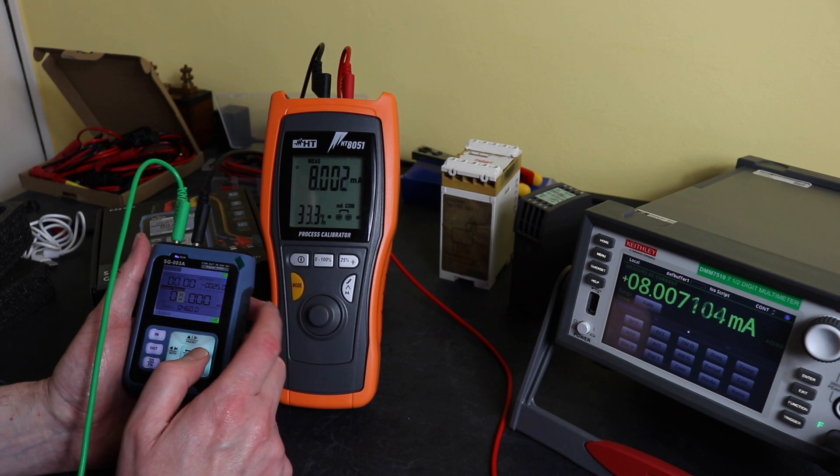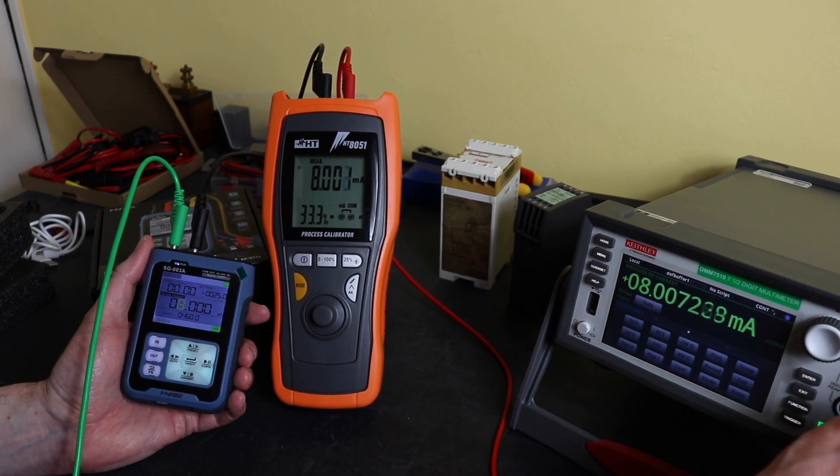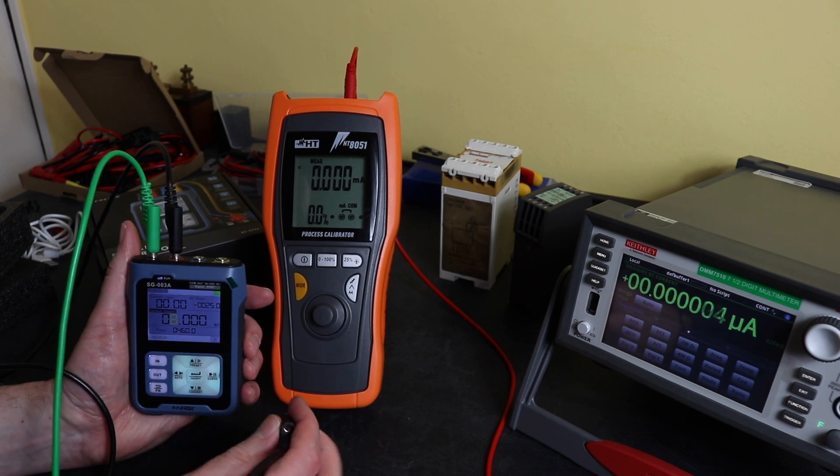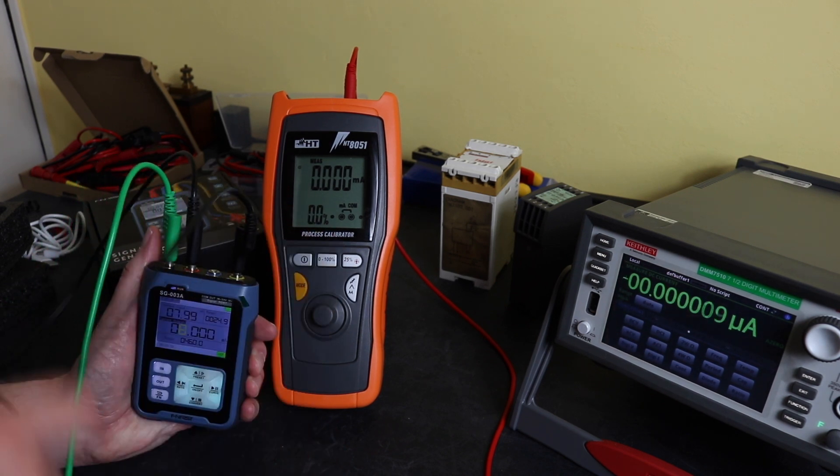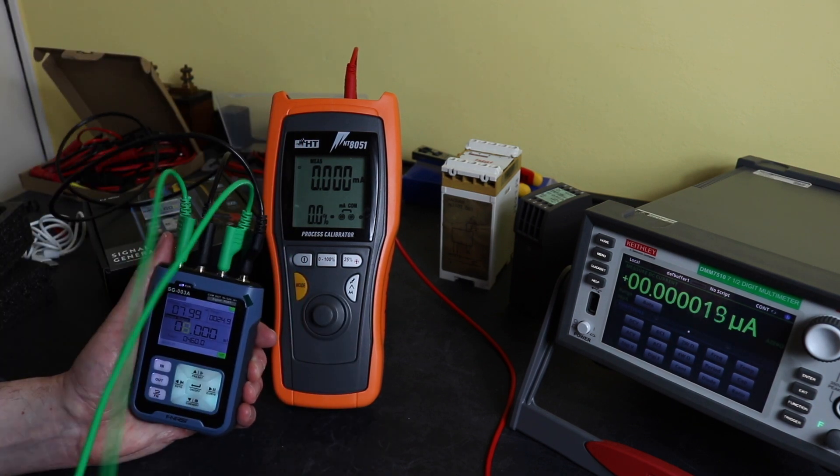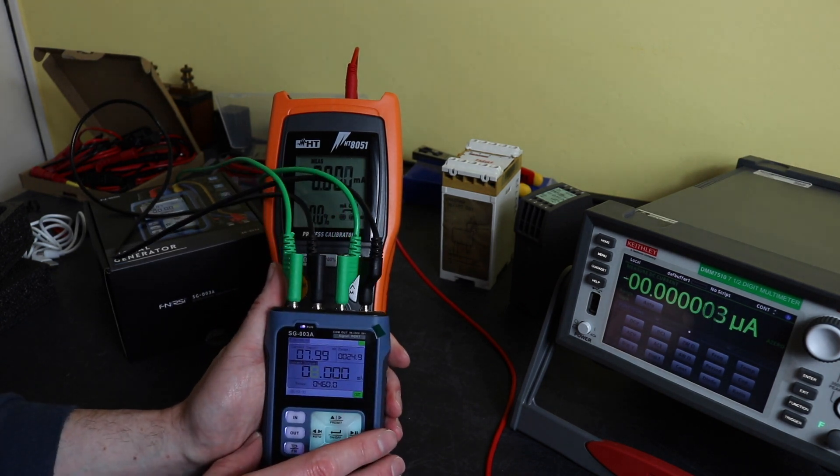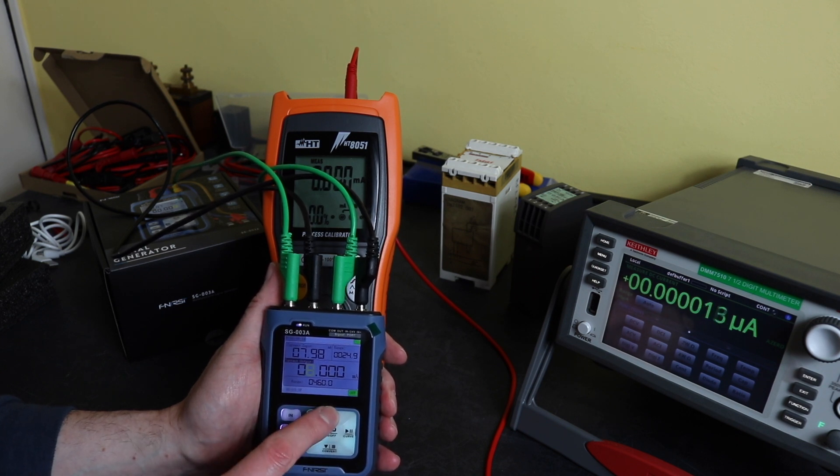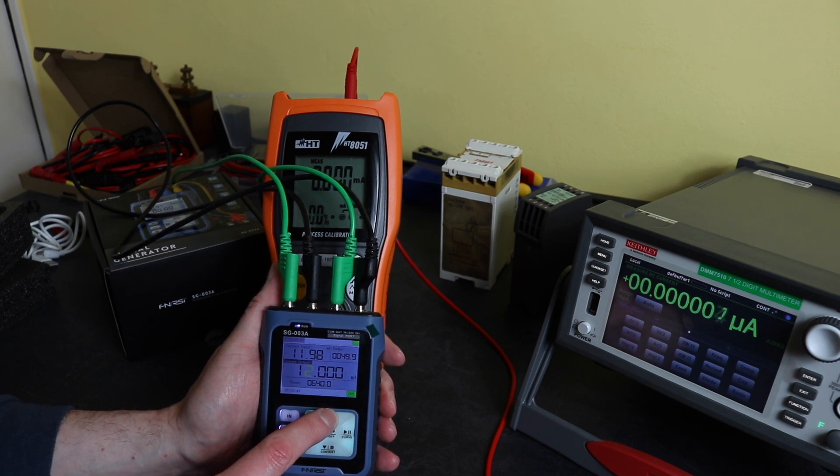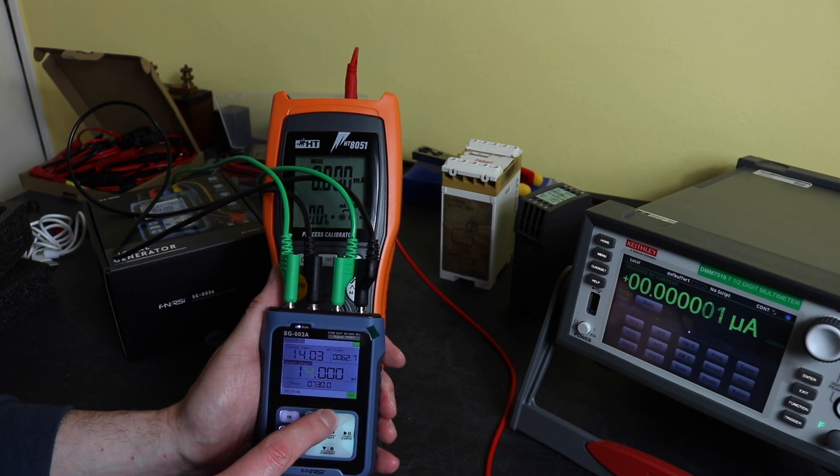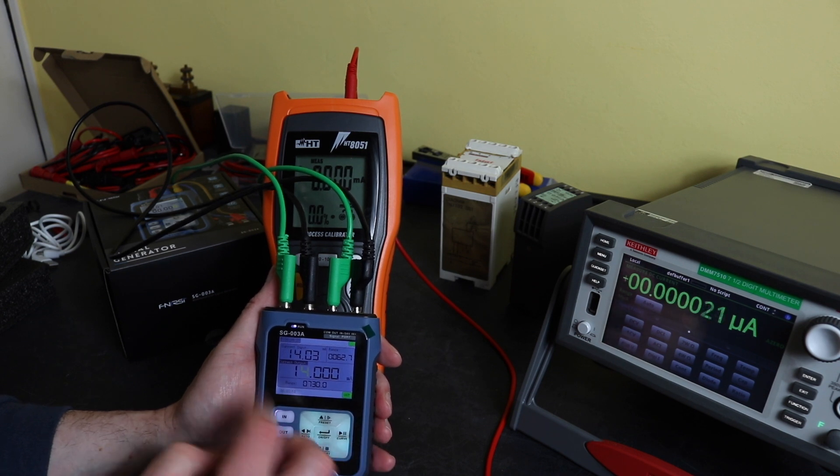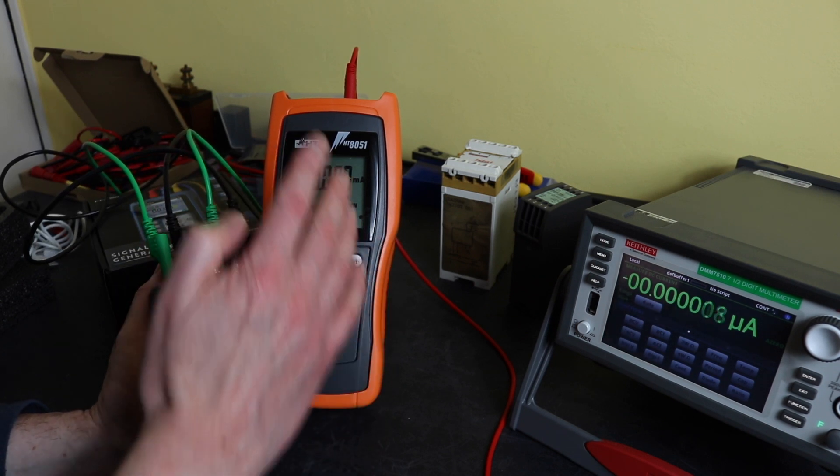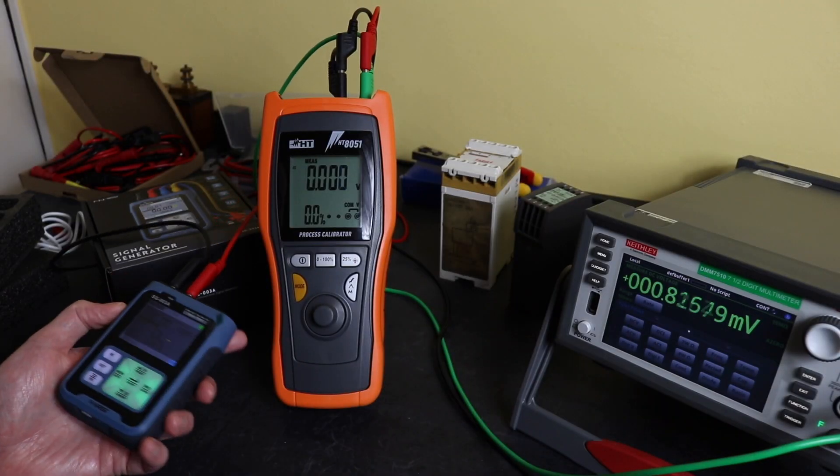What this unit can do that this unit can't is it can actually supply and read at the same time, because the meter is permanently in circuit. I can merely go right around and I've got eight milliamps going out, reading 7.99 on this as well. And then if I choose to change, there's 12, 11.98, 14. So yeah, you can check the instrument out itself, which you can't do with the HT8051.